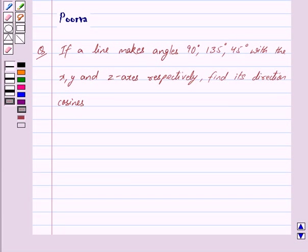Good morning friends, I am Purva and today we will discuss the following question. If a line makes angles 90 degree, 135 degree and 45 degree with the x, y and z axis respectively, then find its direction cosines.